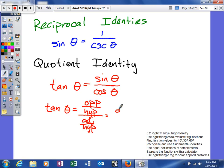We'll get the opposite over the hypotenuse times the reciprocal of the denominator, the hypotenuse over the adjacent. And as you can see, these are going to cancel. It's going to leave us opposite over adjacent, which is our tangent.